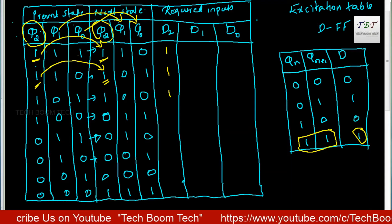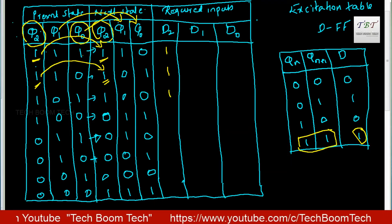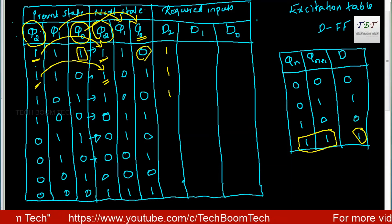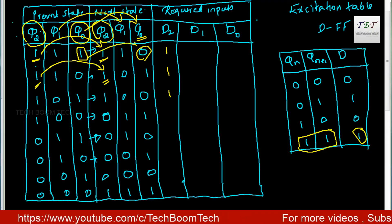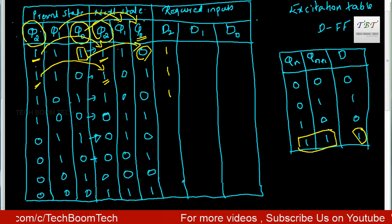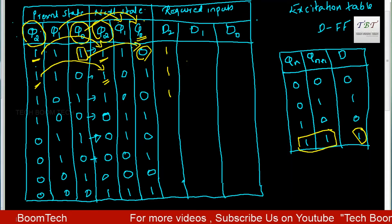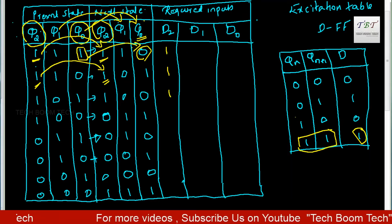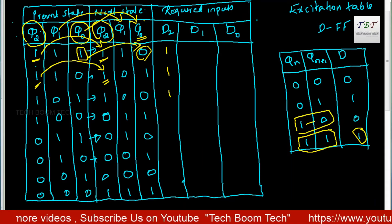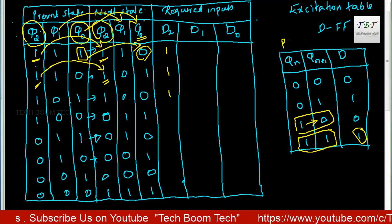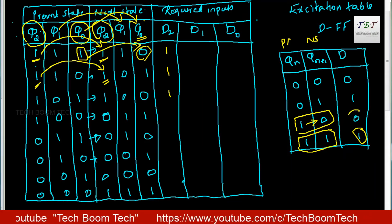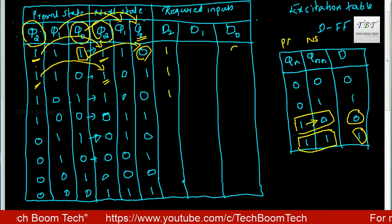For example, if you fill all the values of D0: the present state of Q0 is 1, then the next state of Q0 is 0. So here a 1 to 0 transition occurs. For a 1 to 0 transition in the excitation table, the D value is 0. So we enter 0.